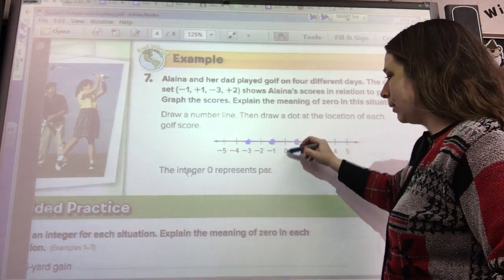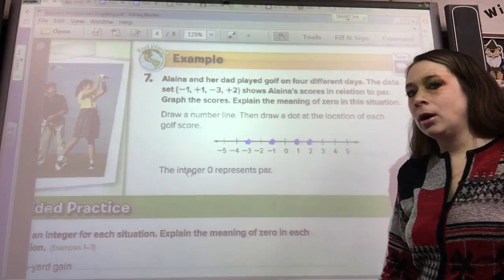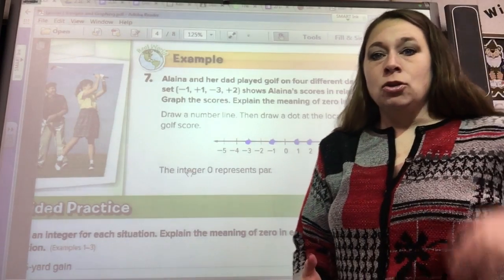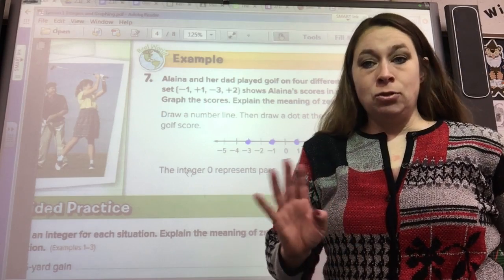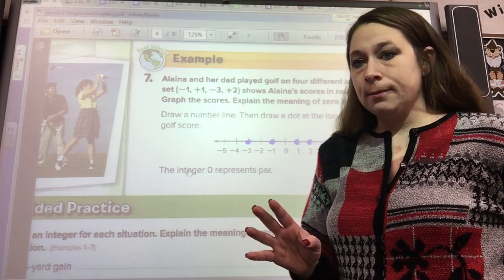The integer zero represents par. So if par was four shots and it said you should be able to make this shot in the hole in four shots, then par means that you did exactly that. You made it in four shots.